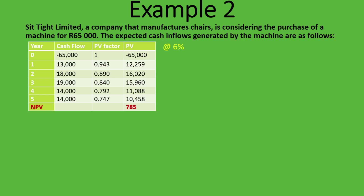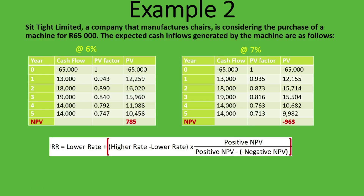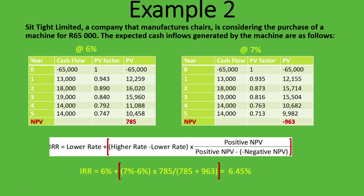We apply the same formula: IRR = lower rate + (higher rate − lower rate) × positive NPV ÷ (positive NPV + |negative NPV|). The lower rate is 6%, the higher rate is 7%, the positive NPV is 785 rand, and the negative NPV is 963 rand treated as positive in the denominator. This gives us an IRR of 6.45%.